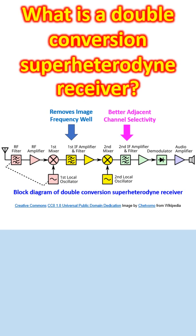We have seen that usual superheterodyne radio receivers have single conversion of received frequency to the intermediate frequency using a single local oscillator and mixer.